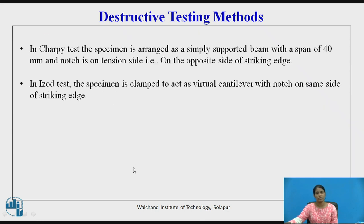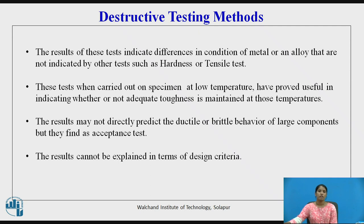In the Charpy test, the specimen is arranged as a simply supported beam with a span of 40 mm and the notch is on the tension side. In the IZOT test, the specimen is clamped to act as a virtual cantilever with the notch on the same side as the striking end. The results of this test indicate differences in condition of metal or alloy that are not indicated by other tests such as hardness or tensile.